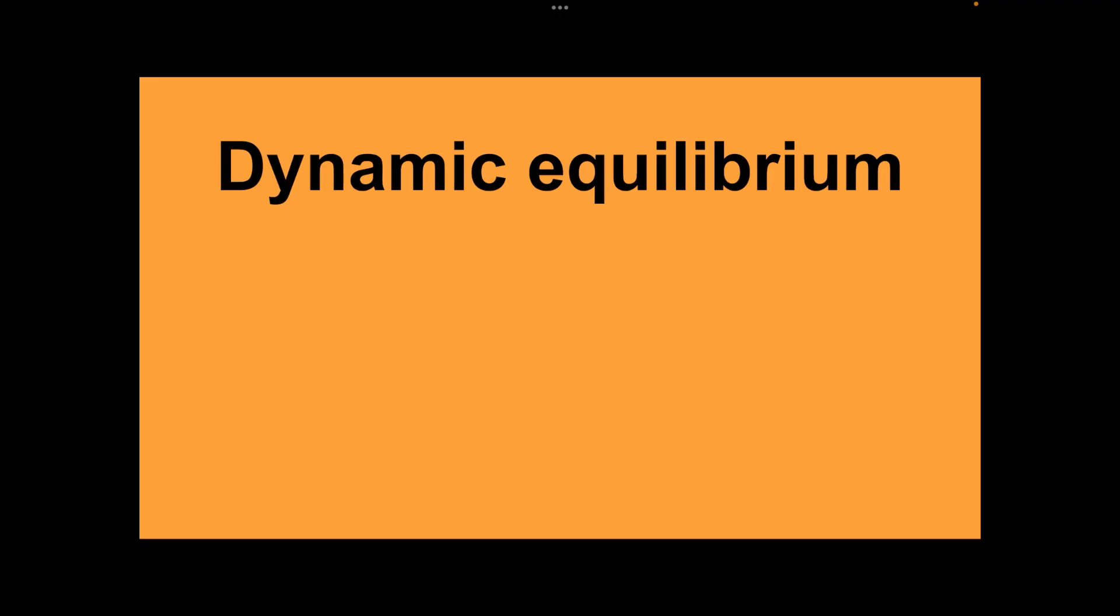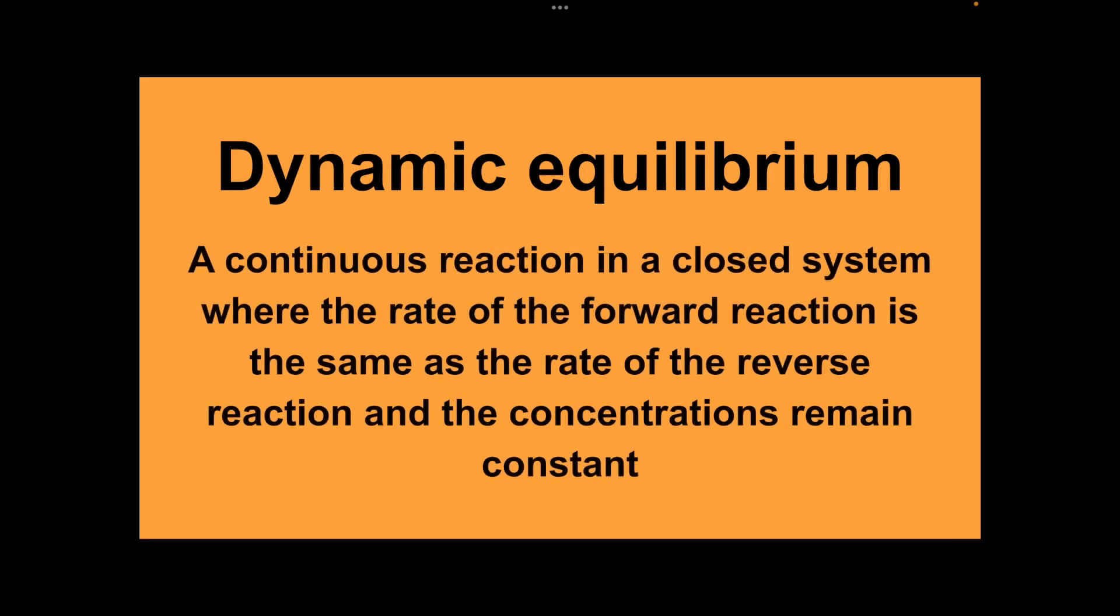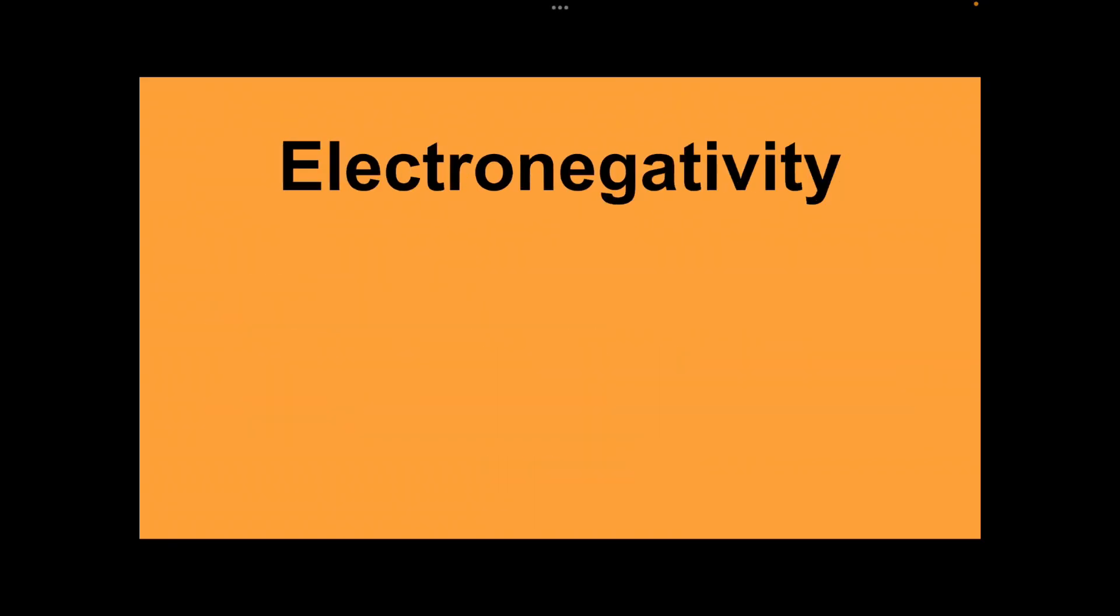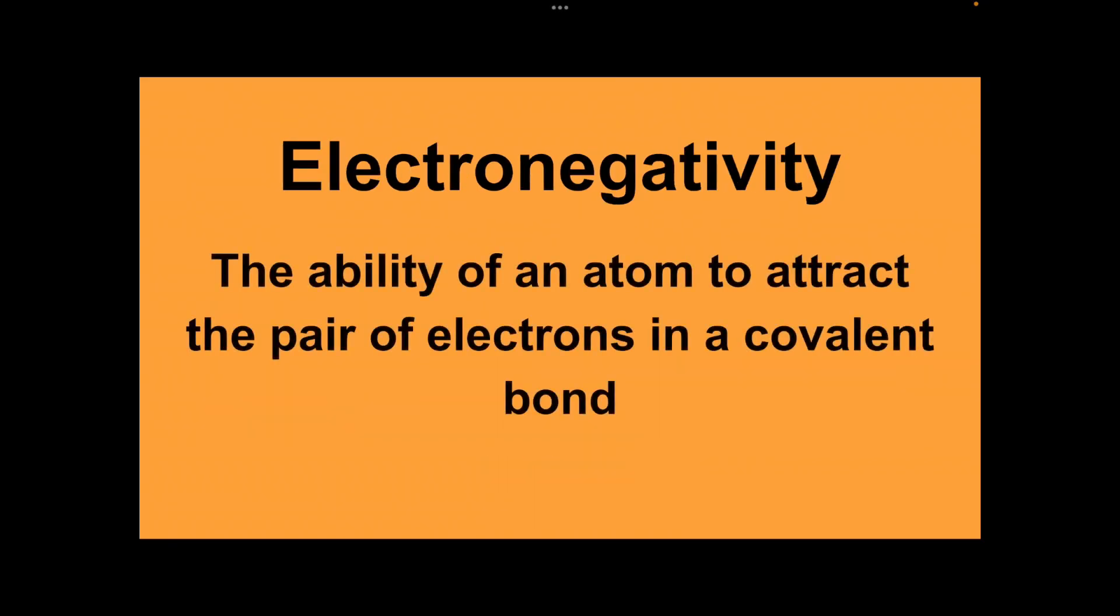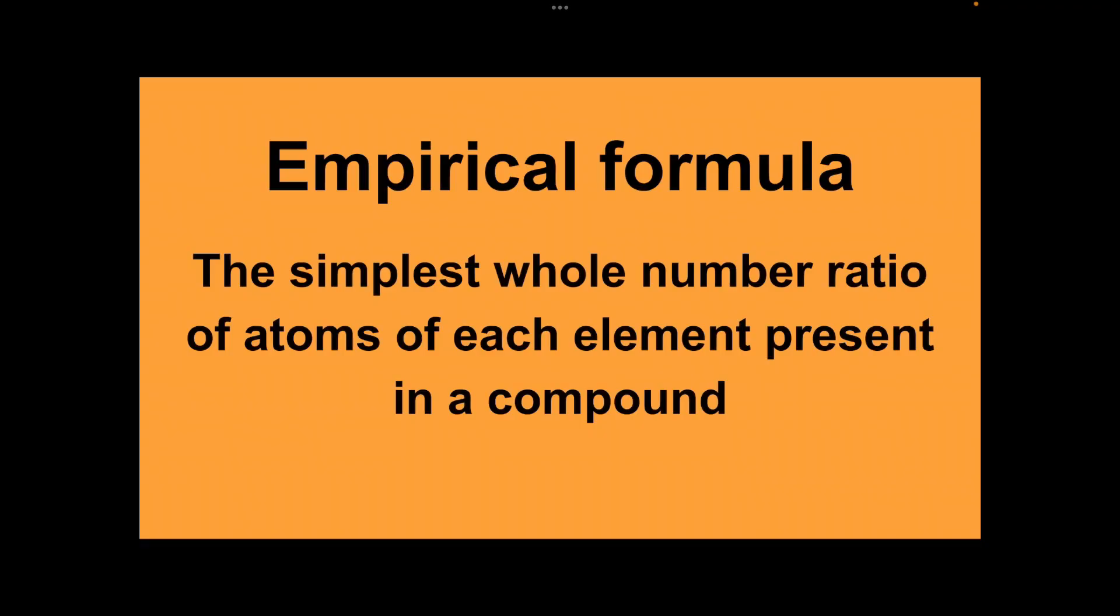Dynamic equilibrium: a continuous reaction in a closed system where the rate of the forward reaction is the same as the rate of the reverse reaction and the concentrations remain constant. Electronegativity: the ability of an atom to attract the pair of electrons in a covalent bond. Empirical formula: the simplest whole number ratio of atoms of each element present in a compound.